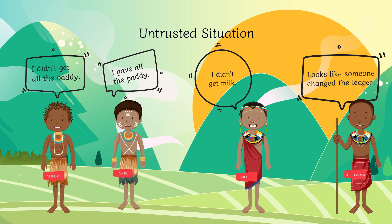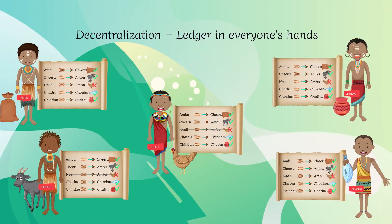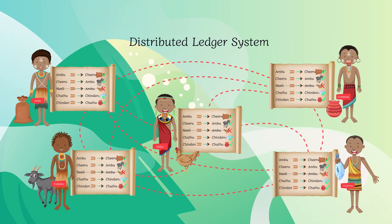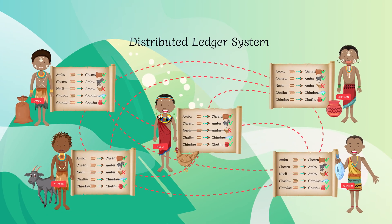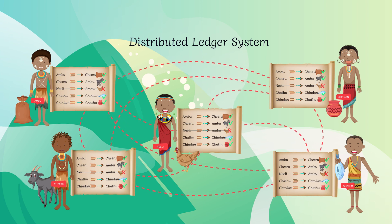Relying on an intermediary for transactions can also have some risks. An intermediary with a centralized ledger may tamper with the records. To avoid such problems, everyone should have a ledger that records all the transactions. A ledger system that is interconnected and verifiable by everyone is called a distributed ledger system.